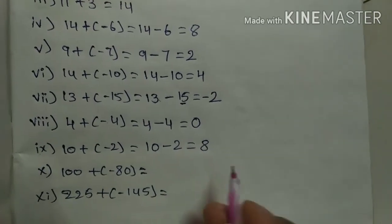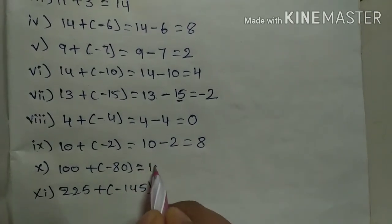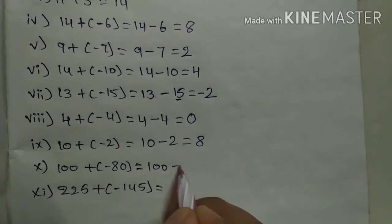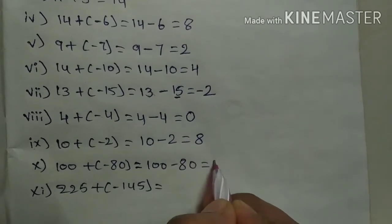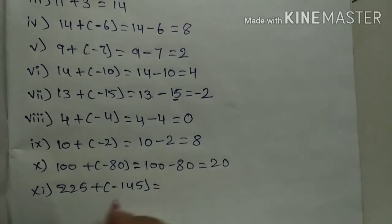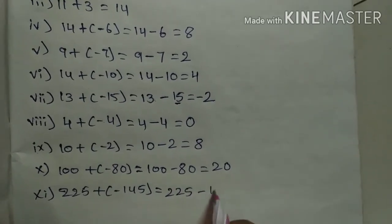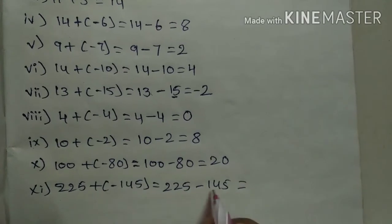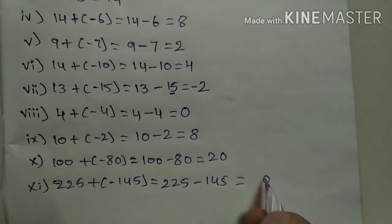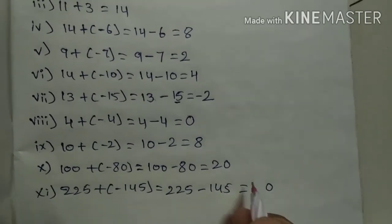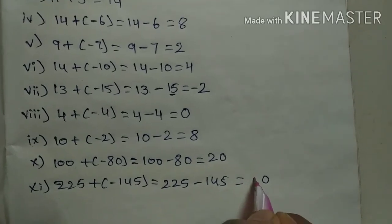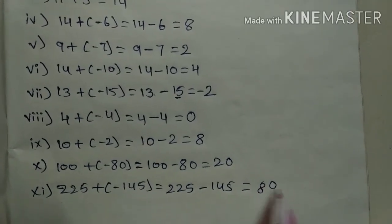Which is 8. Next, 100 again plus into minus minus, so 100 minus 80 equals 20. Next, 225 minus 145, the answer here is 80.